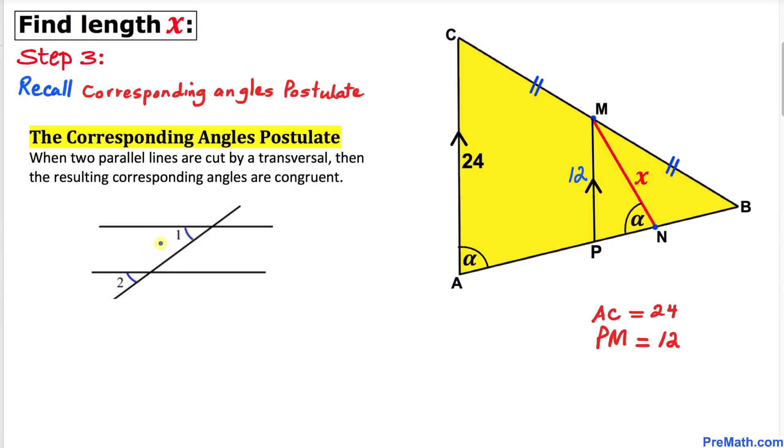In our problem, line segment PM and line segment AC are parallel to each other, and AB is a transversal. Therefore, according to this postulate, angle A is congruent to angle MPN. If this angle is alpha, then this angle is also alpha.